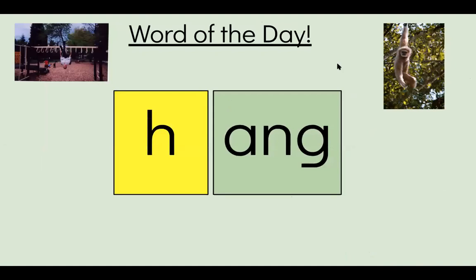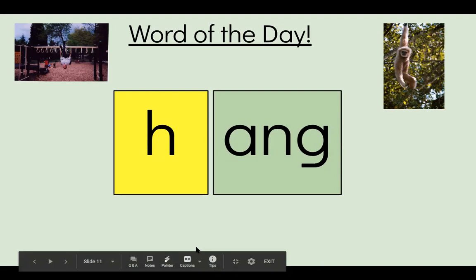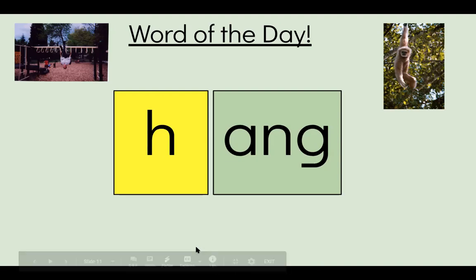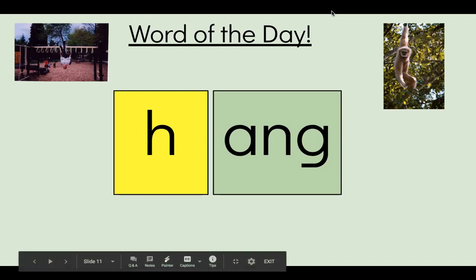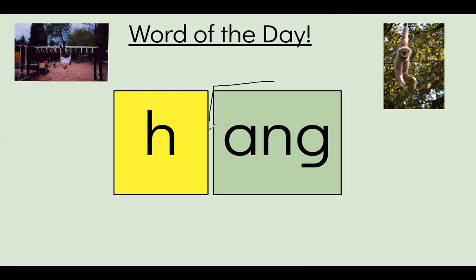Now let's tap out our word of the day and we will mark it up together too. Elbows up. Tap it out. Hang. The word is hang on your paper or whiteboard. Put a letter H and the glued sound A, N, G. Now put a box around the glued sound A, N, G to mark up the glued sound. Great job. Thank you for your perseverance. Let's keep it up.